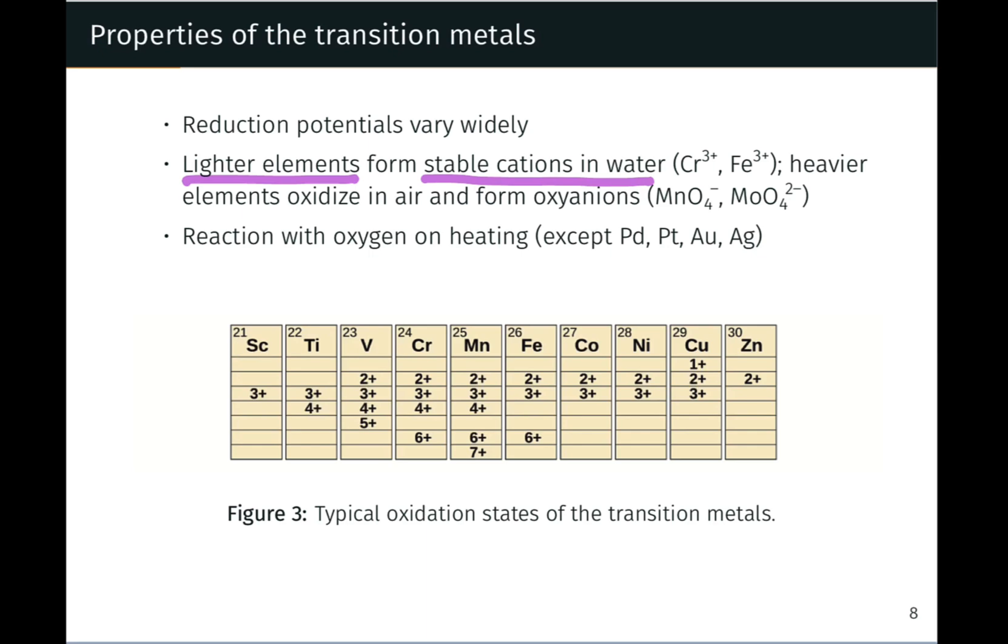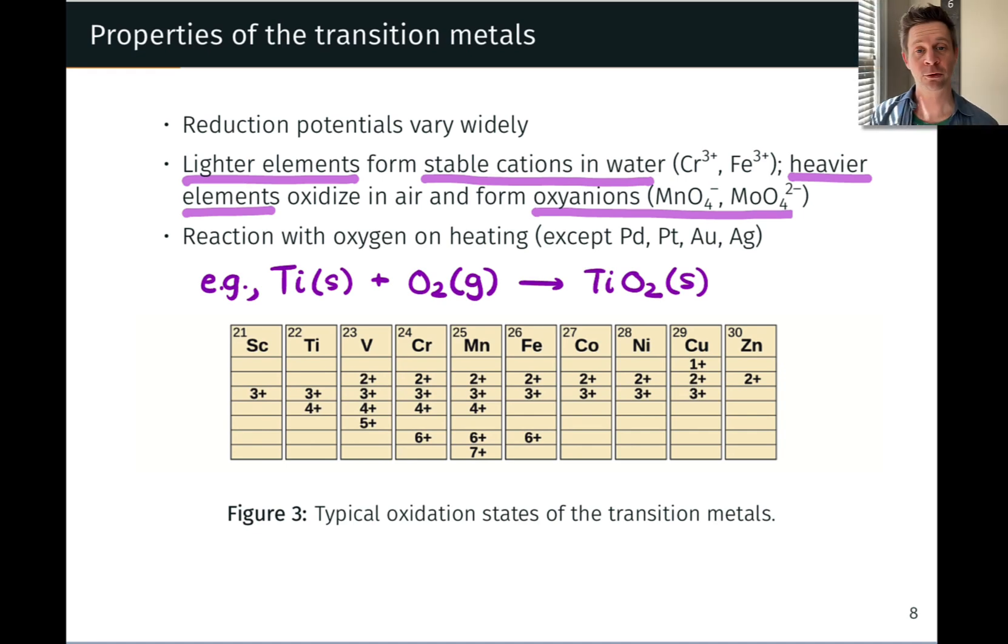Now, a number of the transition elements will react with oxygen on heating in what we can think of as a kind of oxidation process. For example, heating titanium metal in the presence of oxygen gas will lead to the production of titanium 4 oxide as a solid. Notice that this is an oxidation of the titanium metal, which is in the zero oxidation state, to TiO₂ in which titanium is in the plus 4 oxidation state.